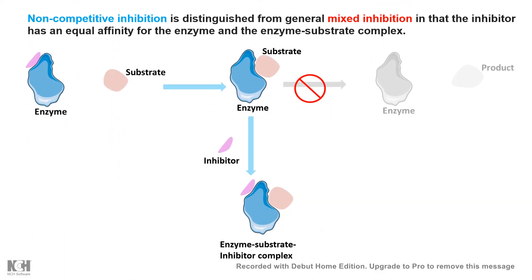The special point about non-competitive inhibition and how it differs from mixed inhibition is that the inhibitor has equal affinity for the enzyme in a free state and for the enzyme in a substrate-bound state. This is very different from mixed inhibition. To understand how non-competitive inhibition is a special case of mixed inhibition, we need to look at the equation for mixed inhibition mathematically.